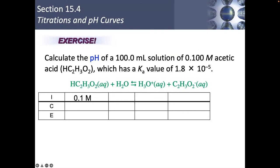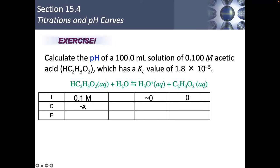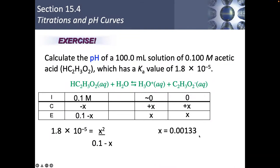Here I can just do an ICE diagram right away. I've got 0.1 M — it's a 0.1 molar solution — I don't even need to use the volume. Initial: 0.1, and about 0 for H⁺ and acetate. The change is minus x and plus x. Equilibrium: (0.1 − x), x, x. Setting up Ka = x²/(0.1 − x) and solving, x = 0.00133, so pH = −log(0.00133) = 2.88.